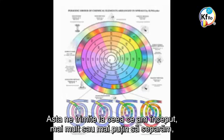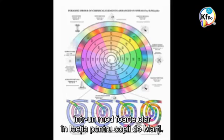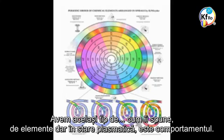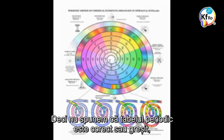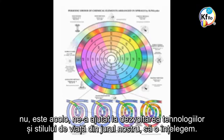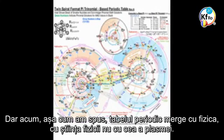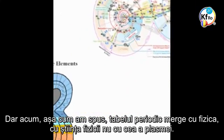This goes back to what we started separating very clearly with the children's program on Wednesday. The periodic table is correct in a matter state. We have the same kind of element in a plasma state — it's the behavior. We don't say the periodic table is right or wrong; it's helped us develop technologies and lifestyle around it. But as I said, the periodic table goes with physics — the science of physics, not the science of plasma.